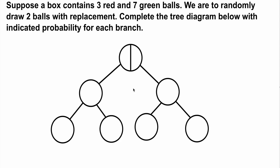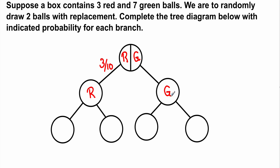On the first draw there are two possibilities: we can draw a red ball or we can draw a green ball. If you select the red ball — and remember this is with replacement, we're going to put it back — you may also select a green ball. The probability that we select the red ball will be 3 over 10, and the probability that we select a green ball will be 7 over 10.